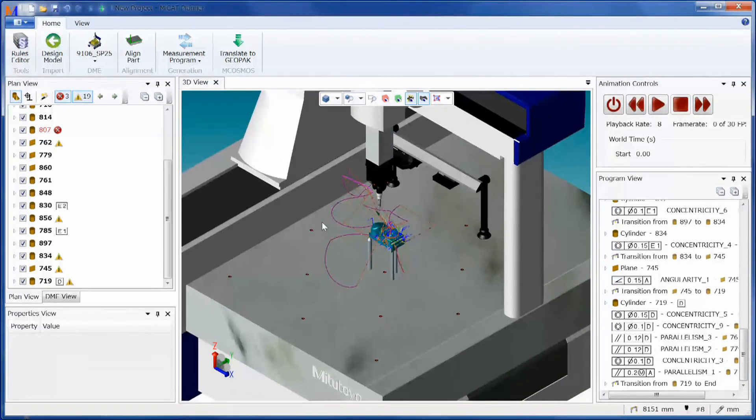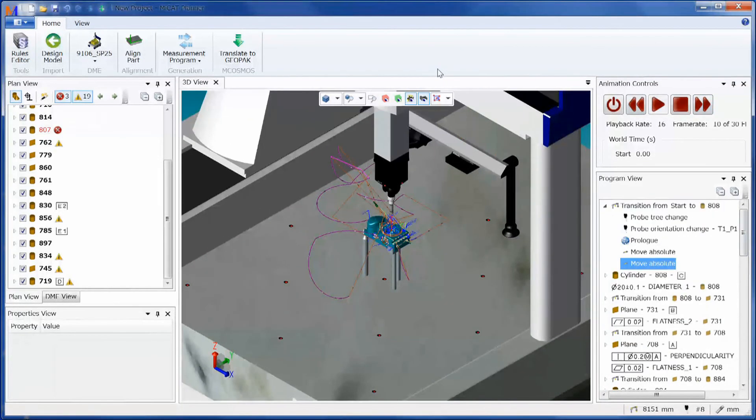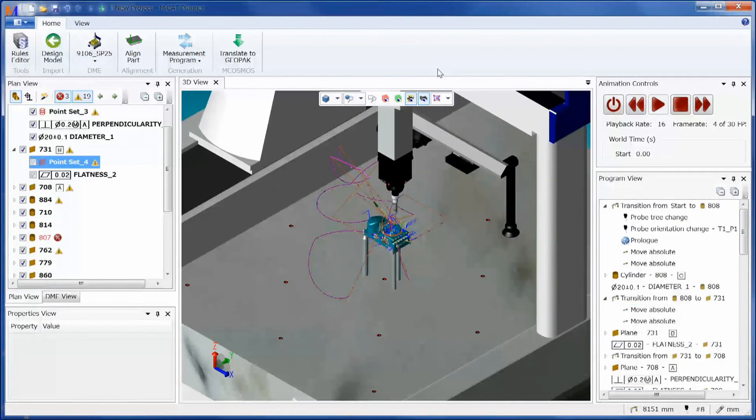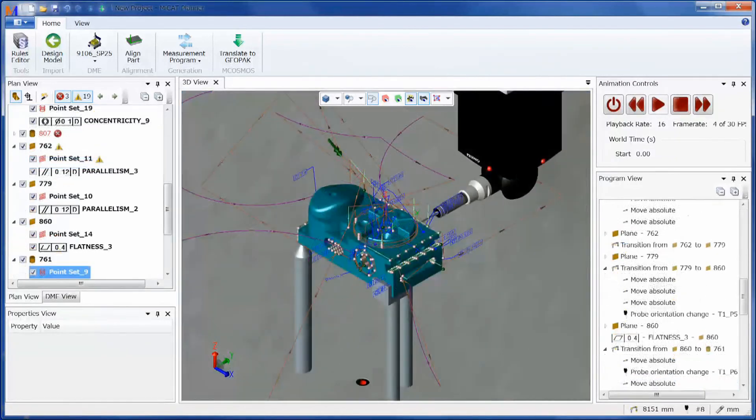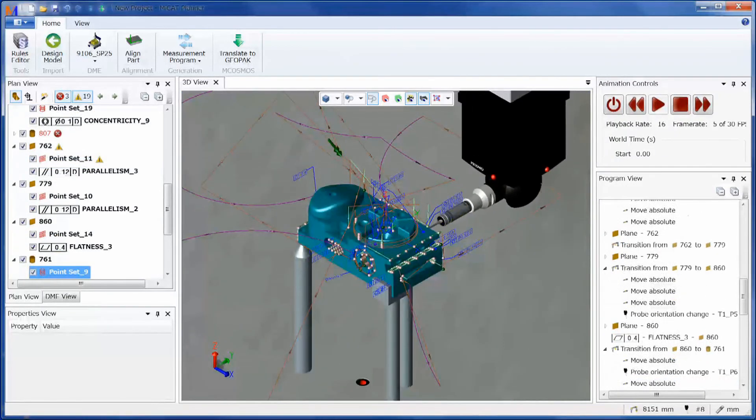CAD data with tolerance information is read. Then the most efficient measurement program in accordance with the rules defined by the customer is automatically generated.